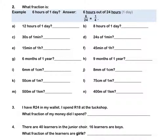We have different units, so we first need to change our day into hours. 6 hours of 1 day is the same as 6 hours out of 24 hours. 6 out of 24 — if we divide top and bottom by 6, gives us 1 quarter in simplest form. Pause this video to complete Question 2 by yourself.